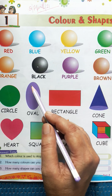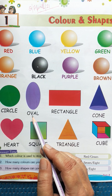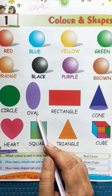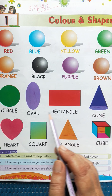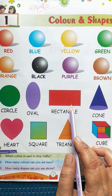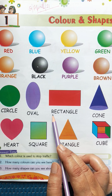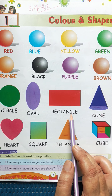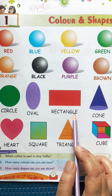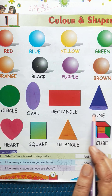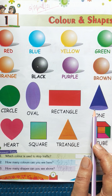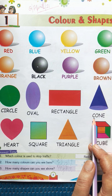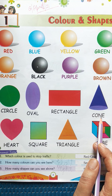This is oval and spelling is O-V-A-L, oval. This is rectangle. Spelling is R-E-C-T-A-N-G-L-E, rectangle. This is shape cone and spelling is C-O-N-E, cone.